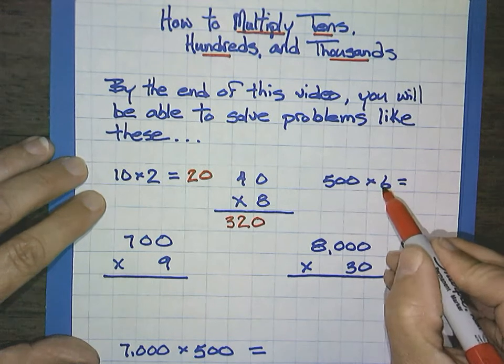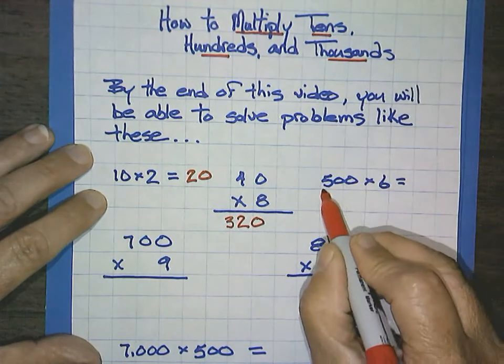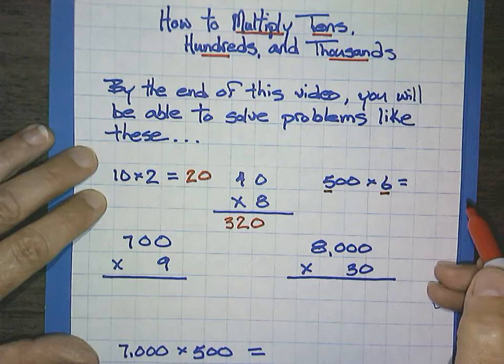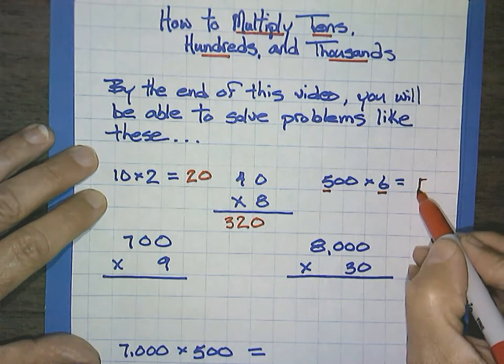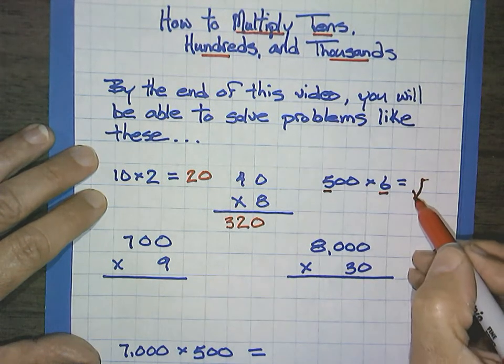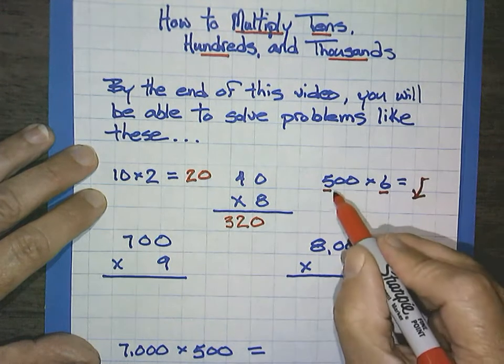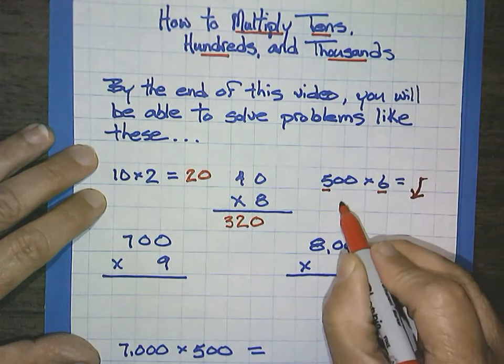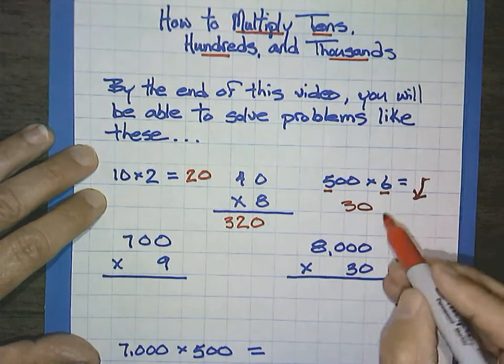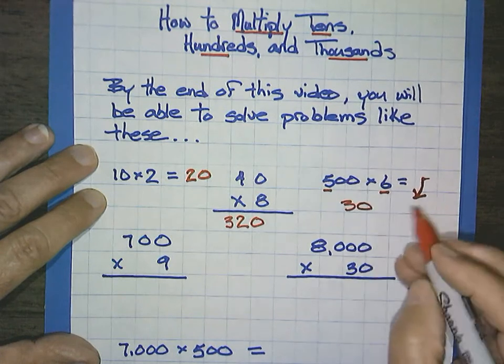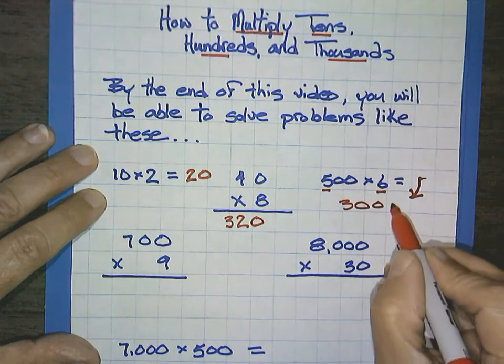500 times 6. I'm going to multiply 5 times 6, which would be 30. I think I'm going to write that down here. So 5 times 6 is 30, and I'm going to count my zeros, 1, 2, and add them, 1, 2.